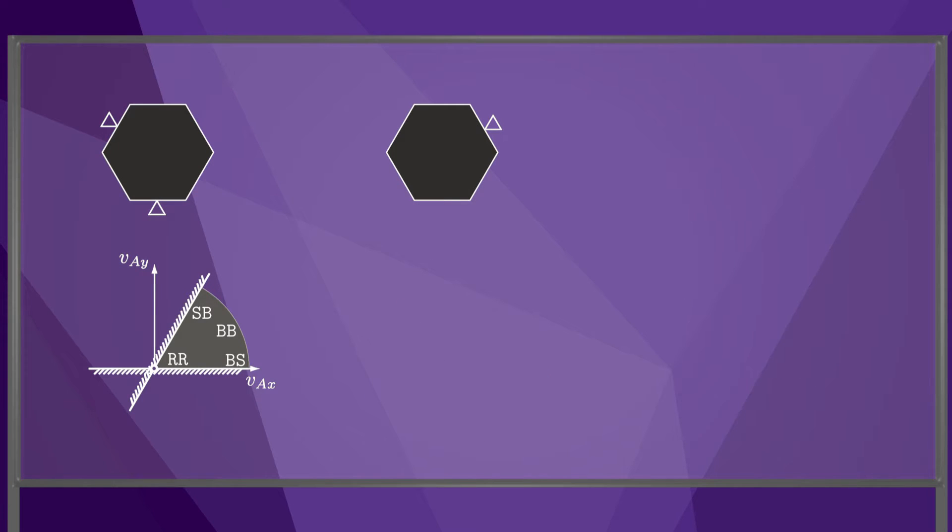If the third fixture is set into motion, then the contact's constraint surface does not pass through the origin. Instead, it passes through the twist of the moving fixture, V3.